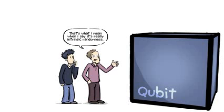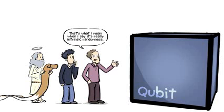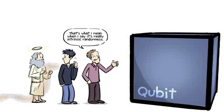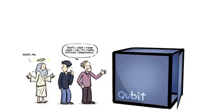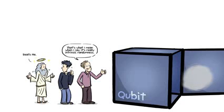That's what I mean when I say it's really intrinsic randomness. It's not that there's some record somewhere, but you haven't looked at it yet. There's no record. It hasn't been decided yet whether it's going to be a zero or a one. It's not until you make the observation and open the door that it becomes the value of this bit.